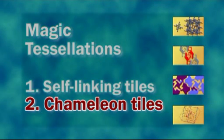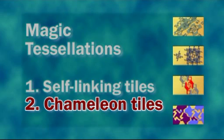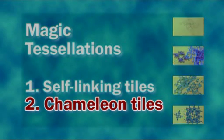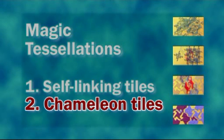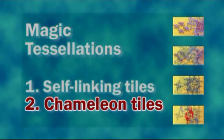In part one of this video I explored the idea of self-linking tiles. In part two I want to show you several examples of what I call chameleon tiles. Chameleon tiles are magical in two ways: first, they can vanish — you can't see them or see what shape they are even when you are looking right at them. Secondly, they can make you see things that aren't there, and even when you know these things aren't there, you will still see them anyway. Most of the following animations are presented twice: the first time with annotations and the second time without. I hope you like them.